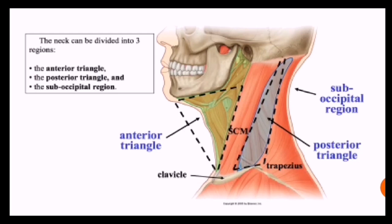We all know that in our neck there are two major triangles - an anterior triangle and a posterior triangle. The sternocleidomastoid muscle divides the neck into an anterior portion and a posterior portion.